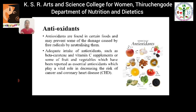So how do we get rid of free radicals? That is through antioxidants. Antioxidants are found in certain foods and may prevent some of the damage caused by free radicals by neutralizing them. Antioxidants supply one electron to free radicals, neutralizing them and preventing cellular damage. The richest sources of antioxidants are beta-carotene, vitamin C supplements, and fruits and vegetables like apple, garlic, berries, spinach, and tomato. These antioxidants play a vital role in decreasing our risk of cancer and coronary heart disease.